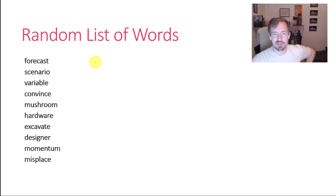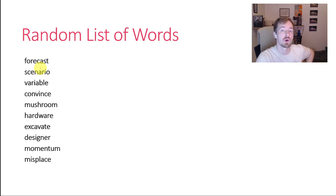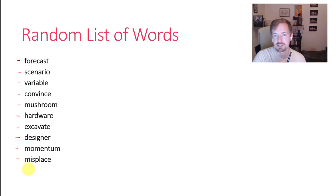I like to start out with an example, so this is going to come up later in this presentation. Let's go through these words slowly — I'll go through them twice. Try to remember these because I'll quiz you on them at the very end of the unit video: forecast, scenario, variable, convince, mushroom, hardware, excavate, designer, momentum, misplace. You can use some of the tricks from unit 4 about explicit memory and retrieval cues. I'll say it one more time.